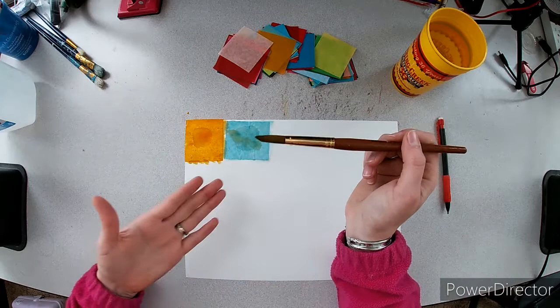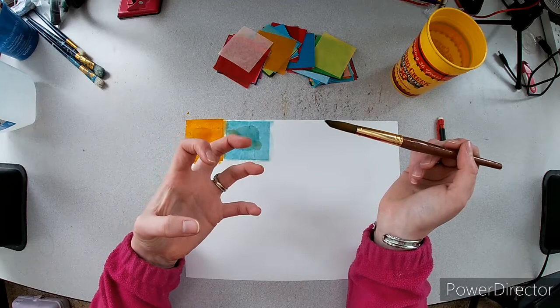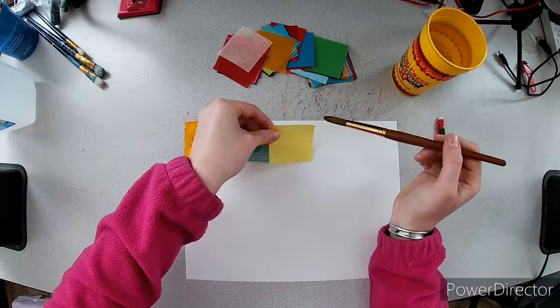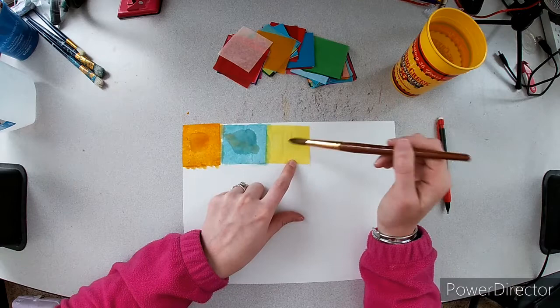The same thing will happen with this paper. The paper can absorb the water, but at some point it gets full. When it's full of water and can't hold any more, that's it being fully saturated. So we want to fully saturate the tissue paper with water and that pushes the ink out of the tissue paper and into our painting paper.